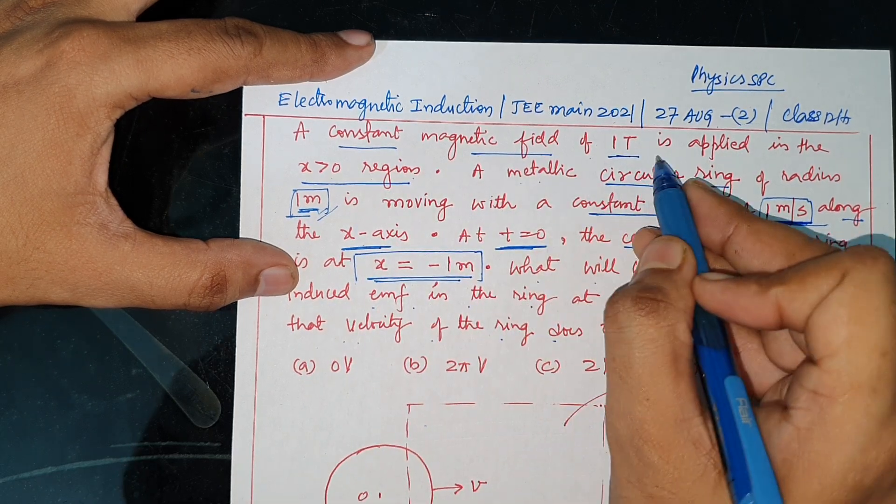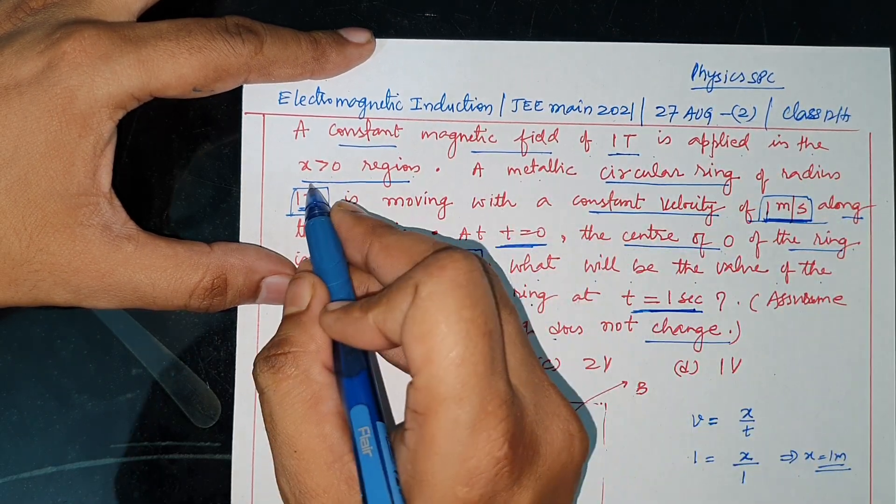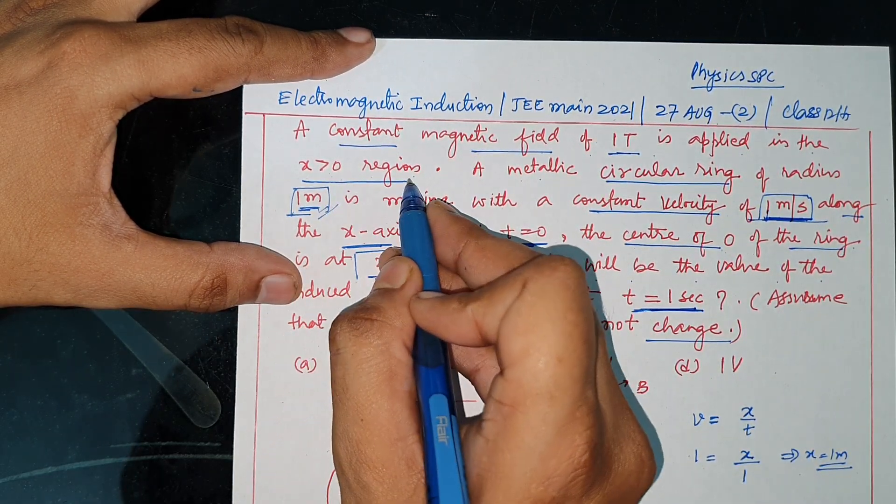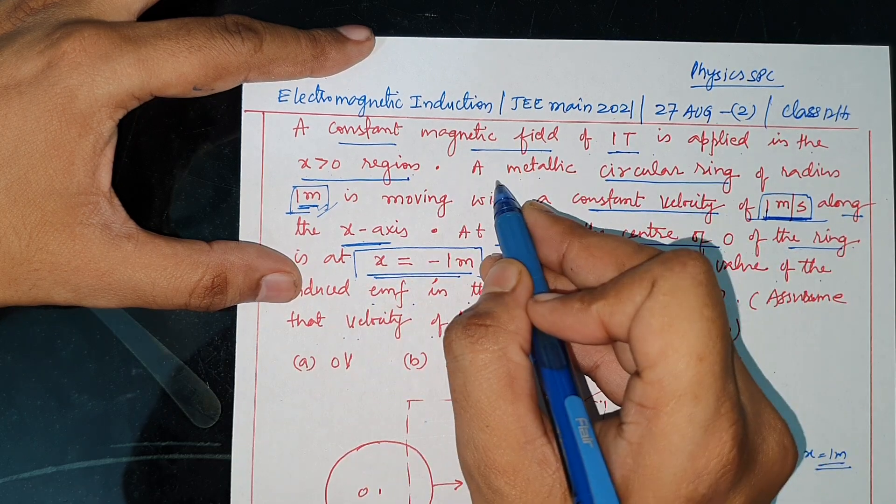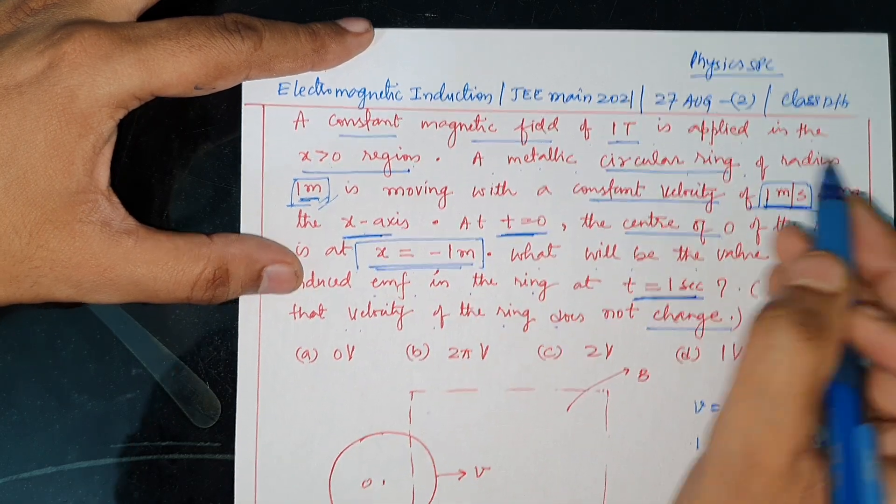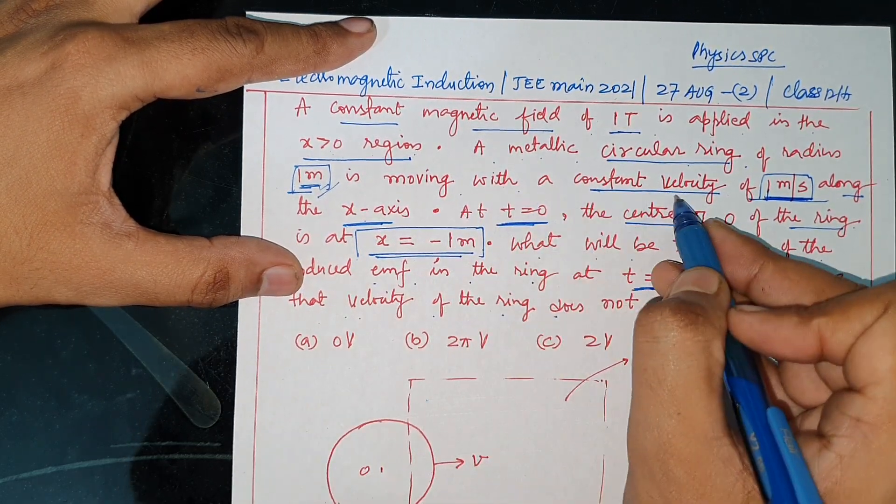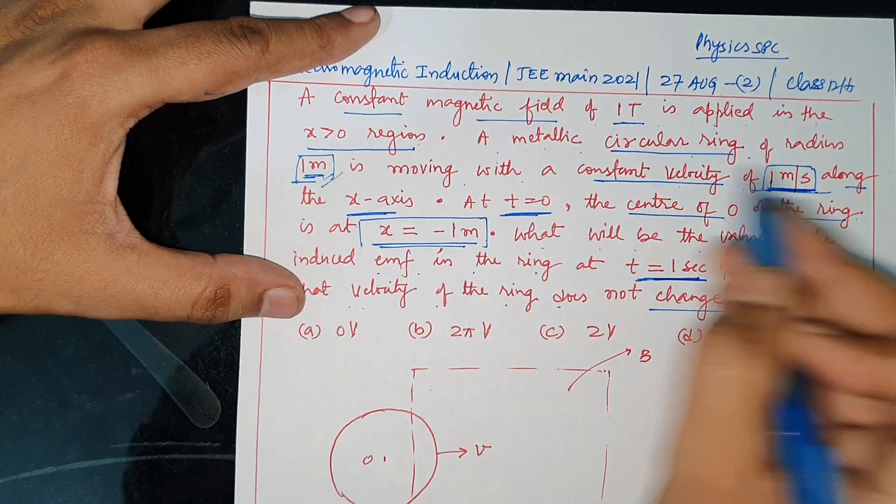A constant magnetic field of 1 tesla is applied in the x greater than 0 region. A metallic circular ring of radius 1 meter is moving with constant velocity 1 meter per second along the x-axis.